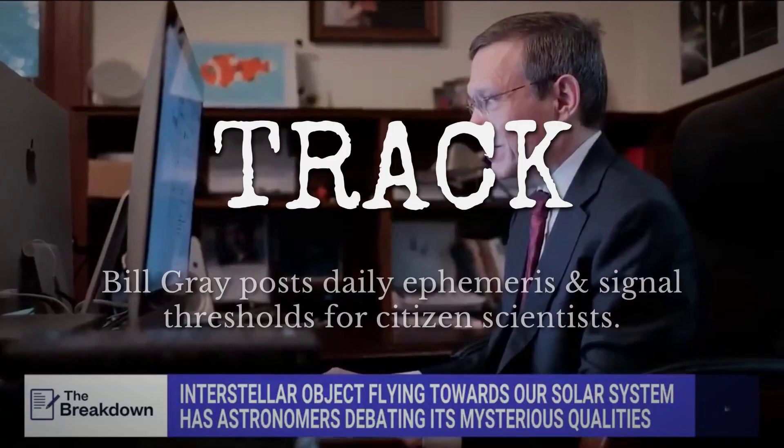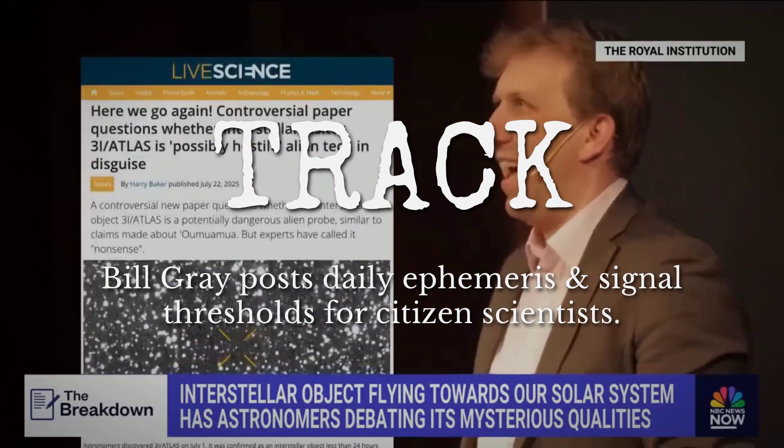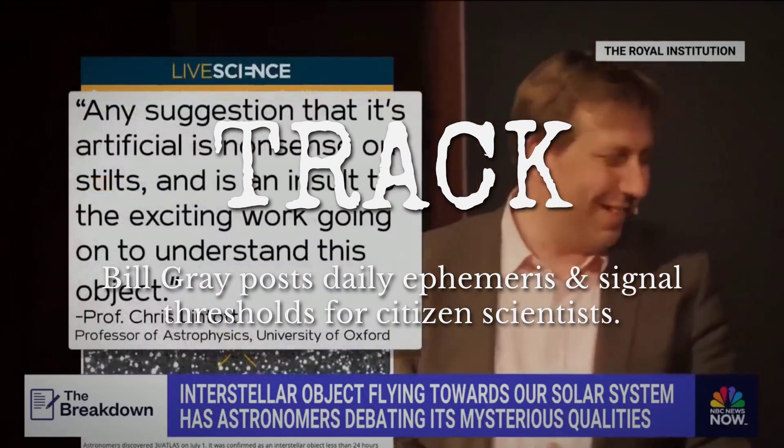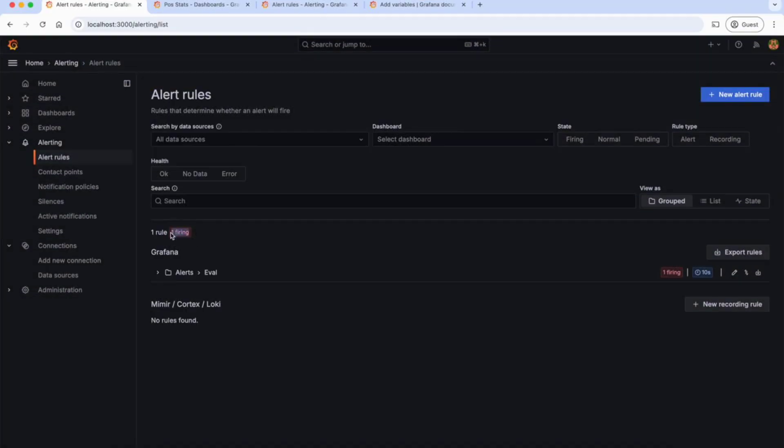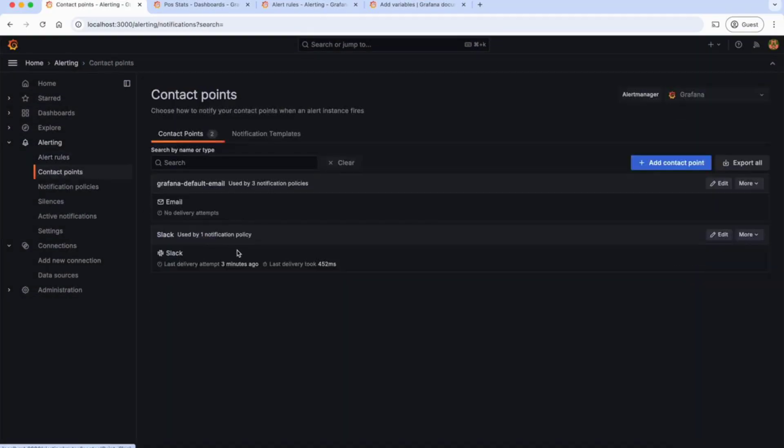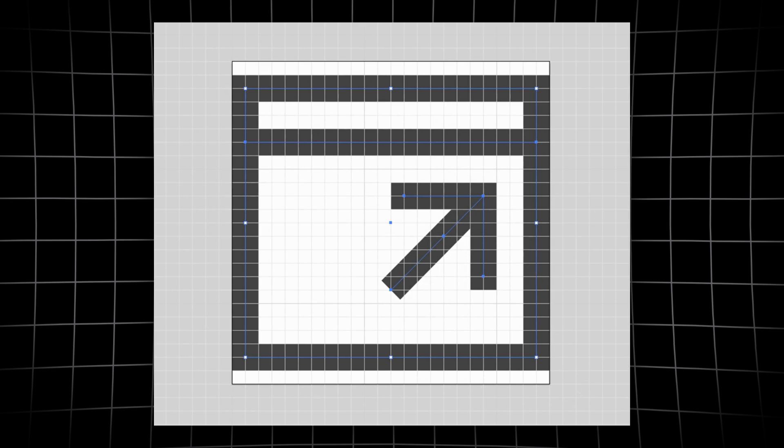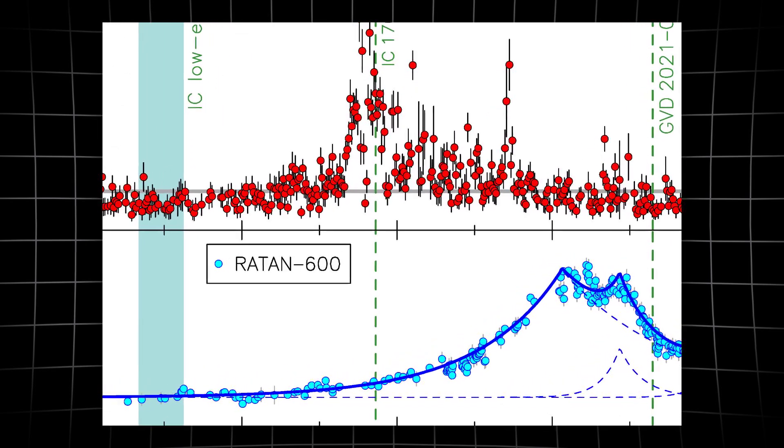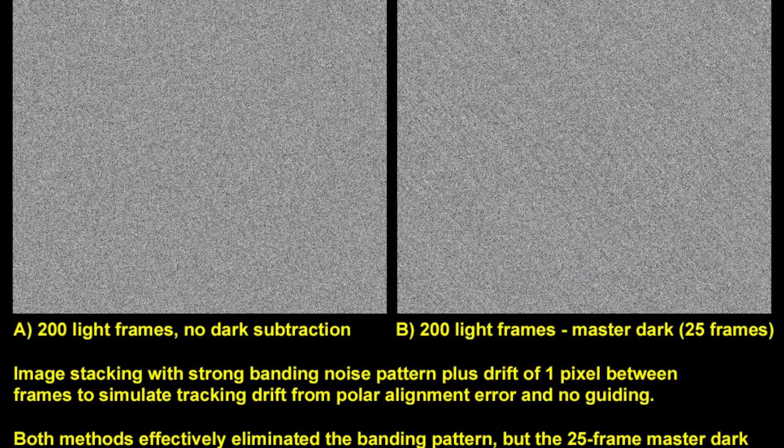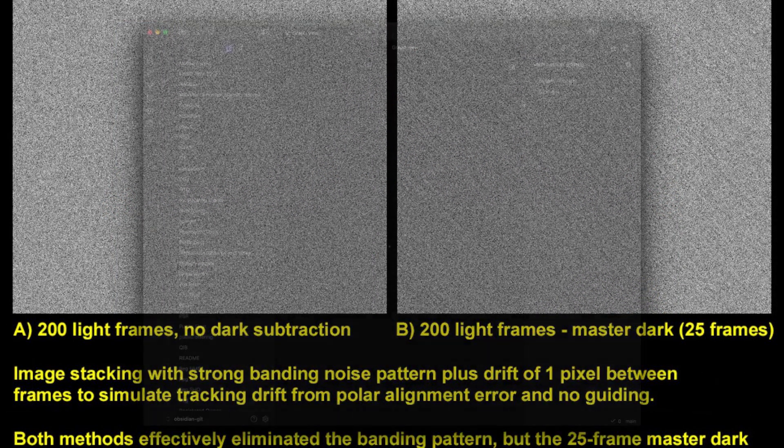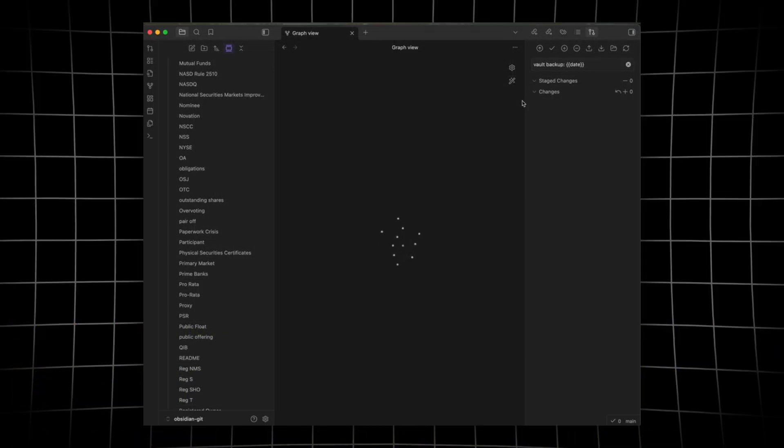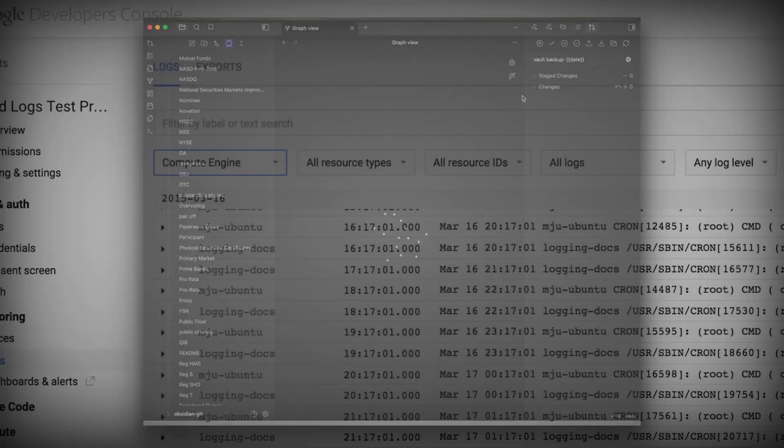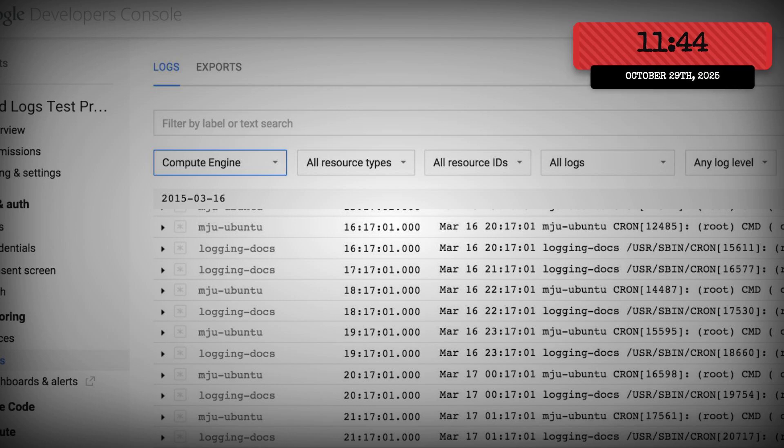Gray coordinates the chaos, posting daily ephemeris updates and signal thresholds. When a possible detection surfaces, the network reruns the stack, tweaking alignment parameters pixel by pixel. Success is measured in fractions of a magnitude, a faint streak that persists through every permutation. The result: a parallel archive of candidate sightings, time-stamped and cross-checked, that stands ready to challenge or confirm whatever the agencies release once the blackout ends.